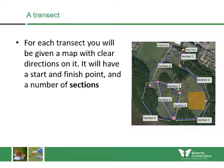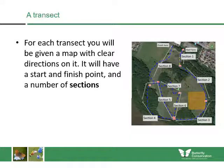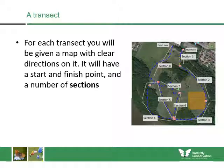For each transect you'll be given a clear map with directions, with clear start and finish points and a number of sections. Sections are usually dependent upon the habitats within them, but it's also useful to have sections dependent on clear waymarkers such as paths or signs that will be there permanently. This is for existing transects, but we can also help you set up your own transect — we can work with you to map it and get it on the website.